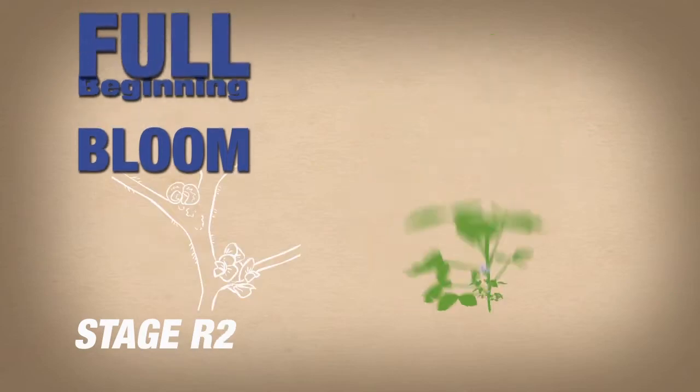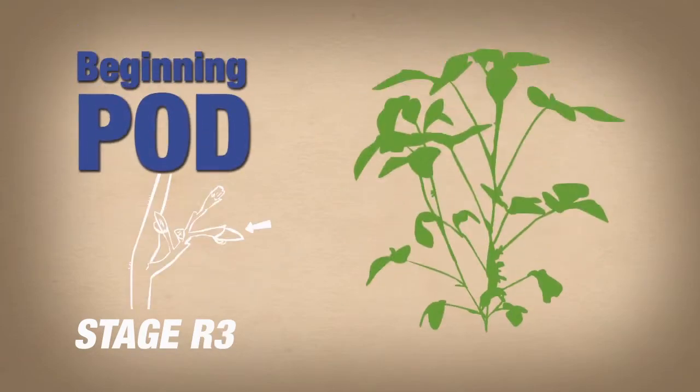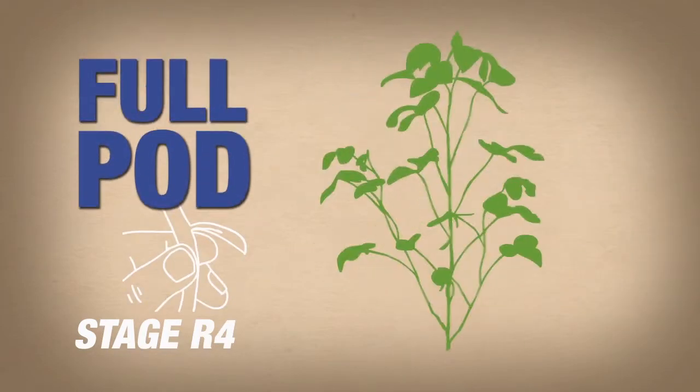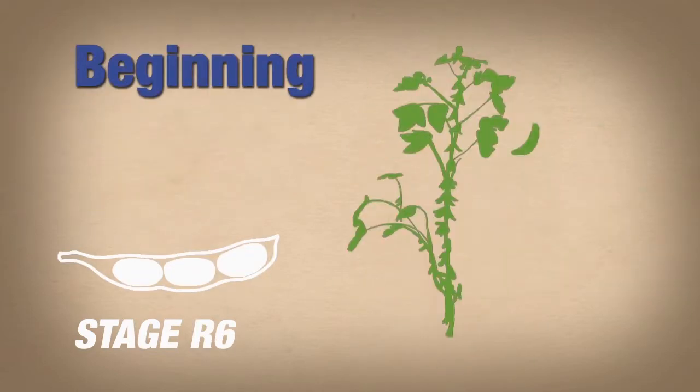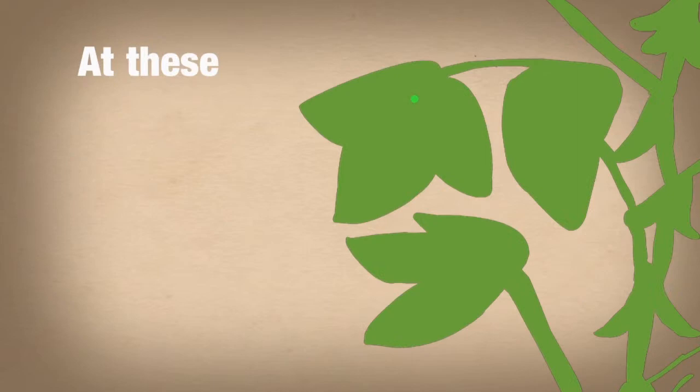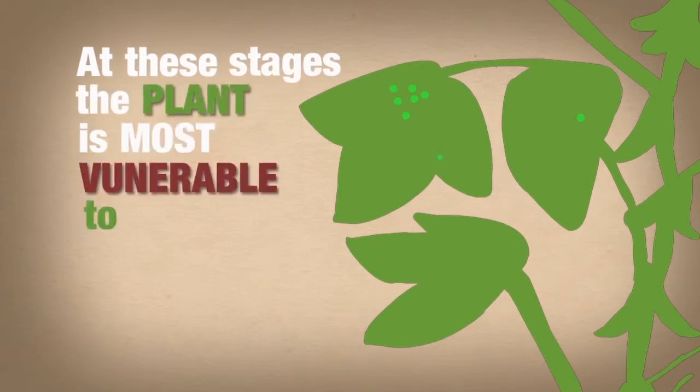Beginning bloom, full bloom, beginning pod, full pod, beginning seed, full seed, and beginning maturity. It's at these stages that the plant is most vulnerable to soybean aphid.